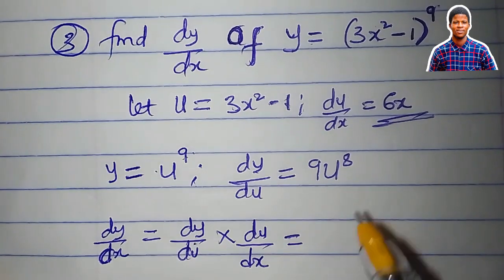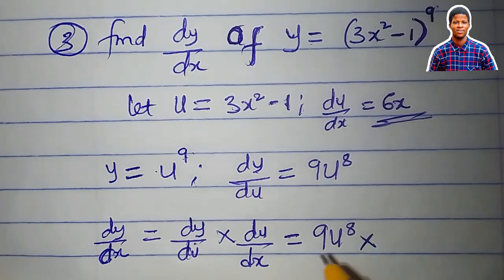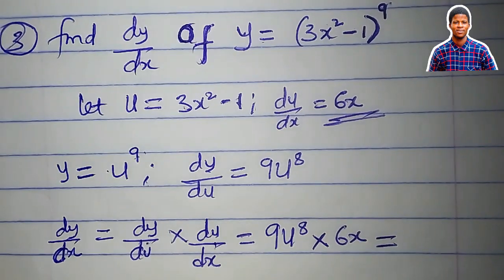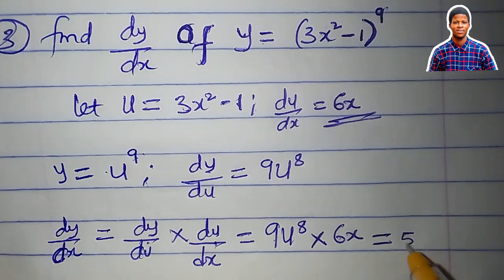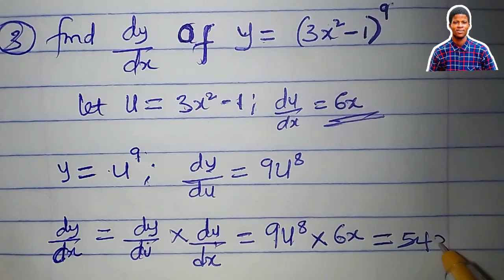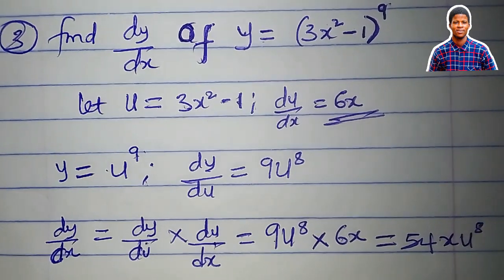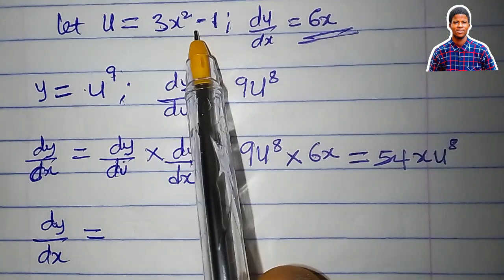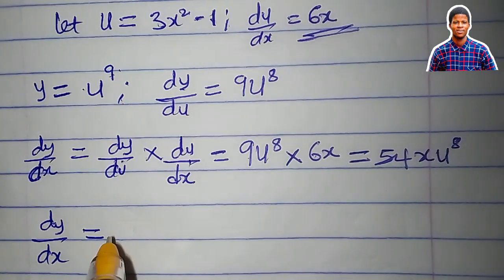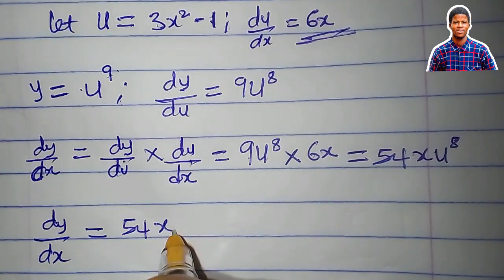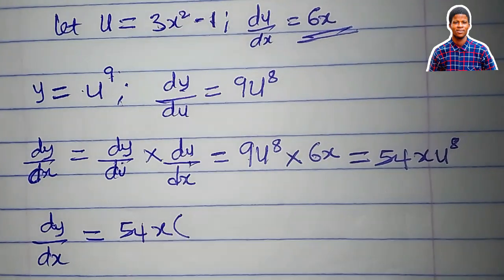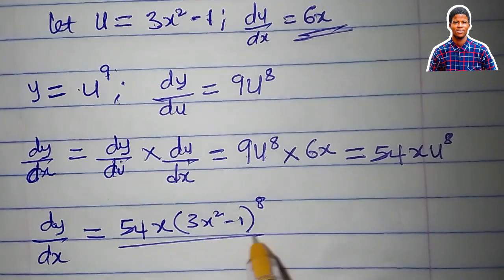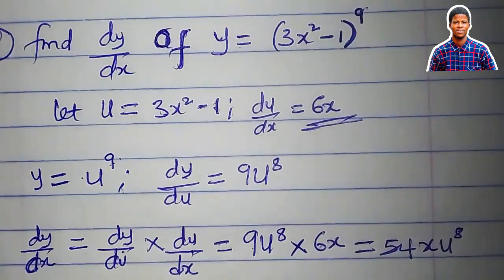We are looking for dy/dx, so by the chain rule: dy/dx = dy/du times du/dx. dy/du is 9u^8 and du/dx is 6x. So we have 9 times 6 = 54, giving 54x times u^8. Since u = 3x² - 1, we substitute back: dy/dx = 54x(3x² - 1)^8.